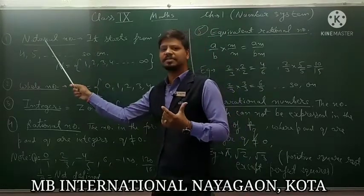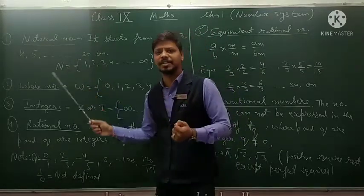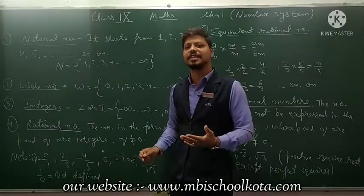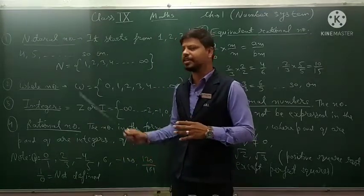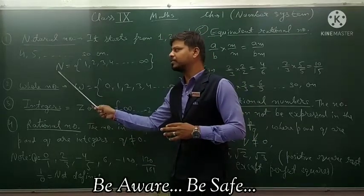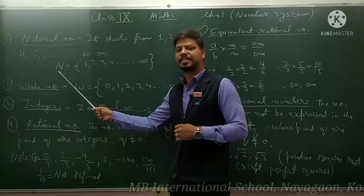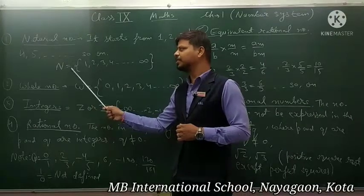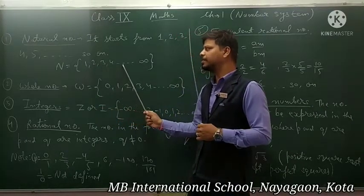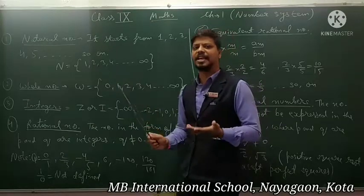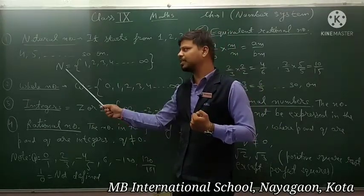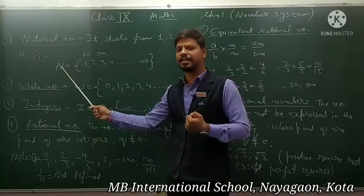Natural numbers start from 1, 2, 3, 4, 5, and go up to infinite. Natural numbers are represented by capital N. So N is equal to the set of {1, 2, 3, 4, ...} up to infinite. Numbers starting from 1 and going to infinite are called natural numbers, and they are denoted by capital N.